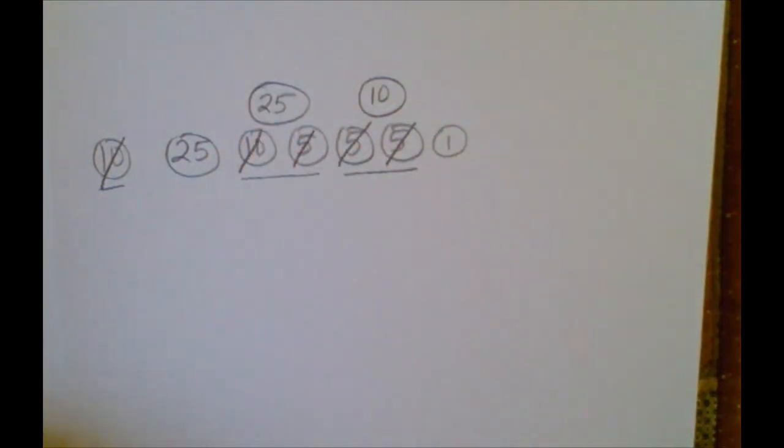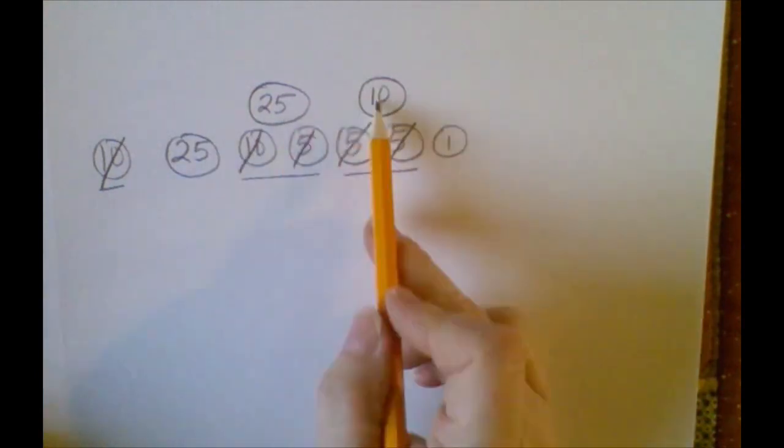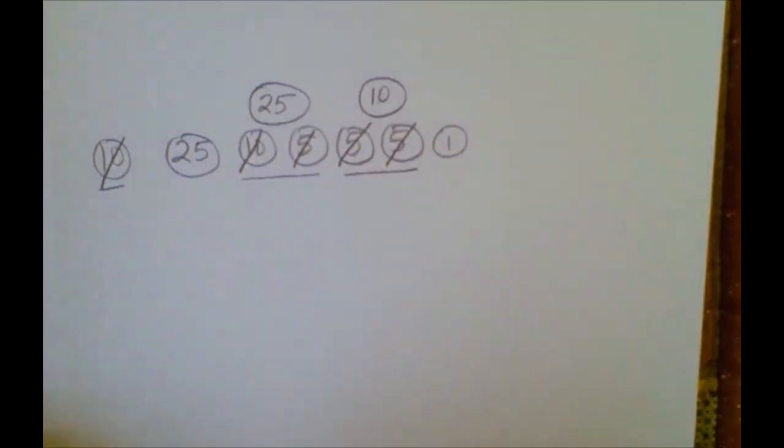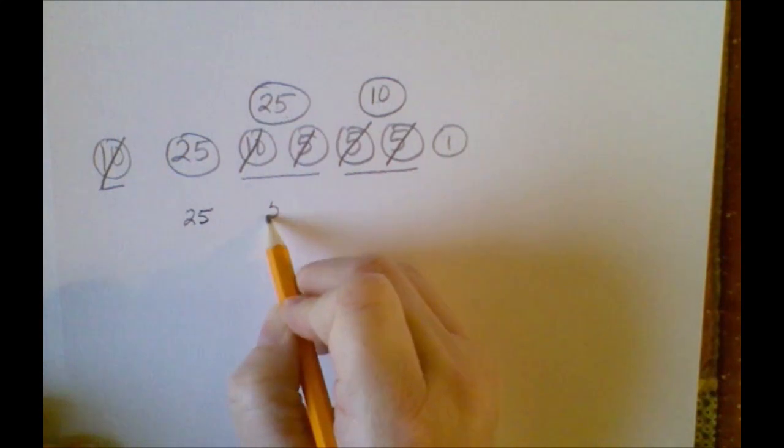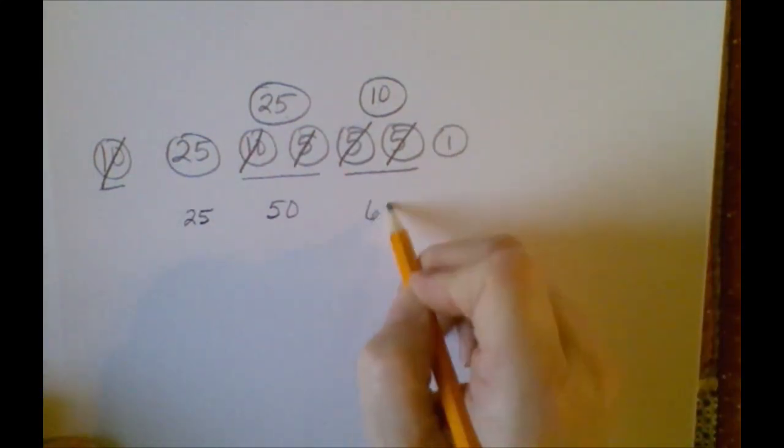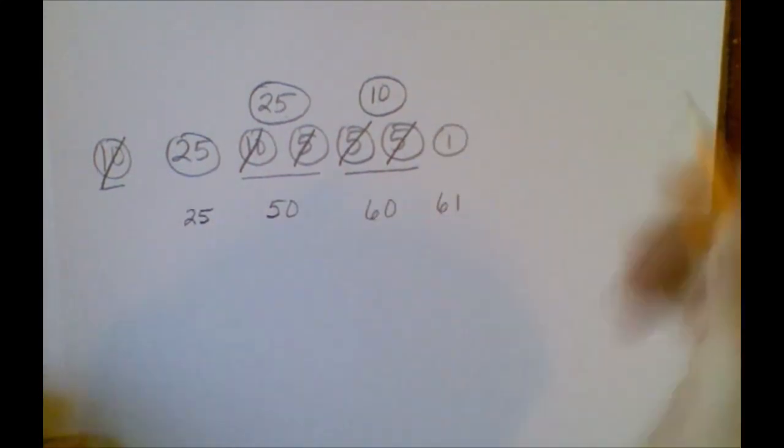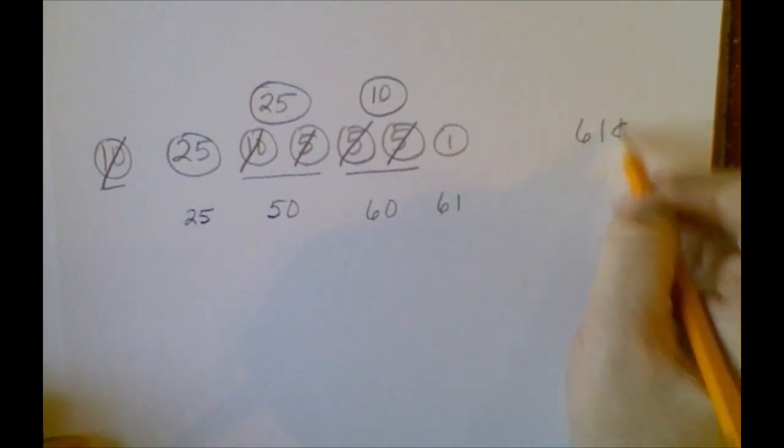Very good. Looking at my coins, I can't make any more exchanges. Four is the least amount of coins I can come up with. Now I'm going to start my running total: 25, another quarter, two quarters are 50 cents, and a dime is 60, and a penny is 61. So we have 61 cents.